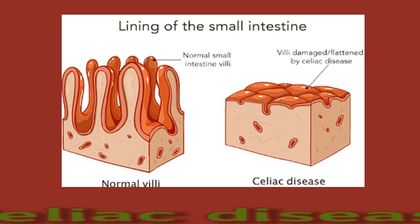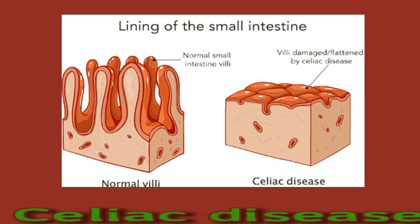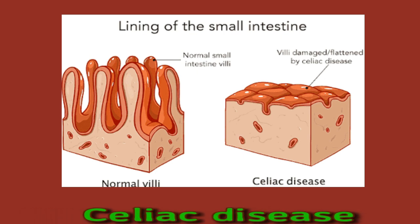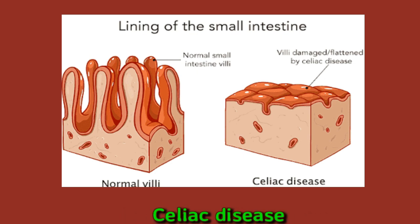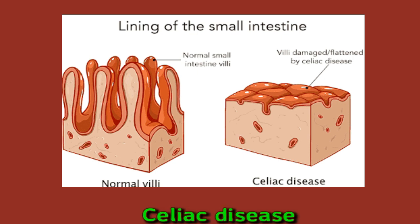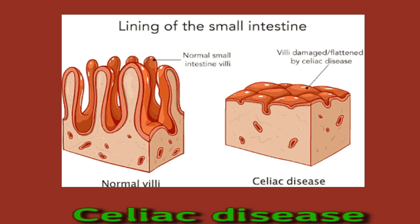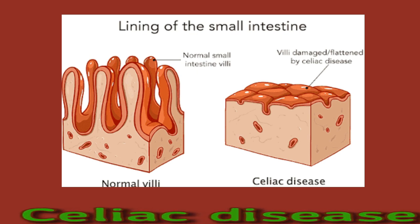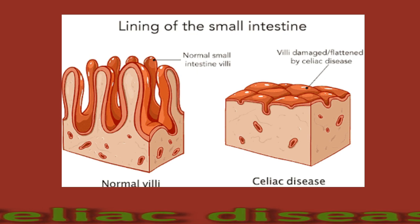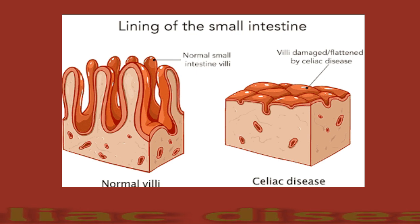Celiac disease is a chronic condition that occurs in the digestive tract when a person cannot digest gluten. Gluten is a protein found in wheat and is present in several foods and healthcare products. When a person has celiac disease, eating gluten triggers their immune system to attack portions of the intestine, causing various digestive issues. Without treatment, celiac disease can cause long-term damage to the small intestine. Symptoms may include abdominal pain, pressure and gas, bloating, fatigue, weight loss, and diarrhea. A person should speak with a doctor if they think they may have celiac disease.